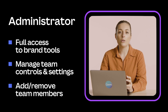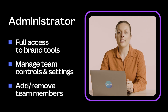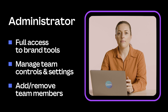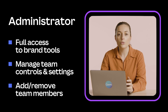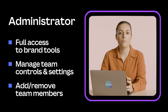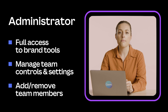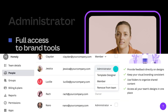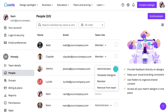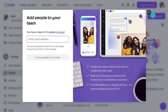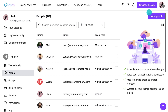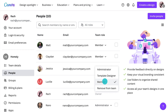The third role is Administrator. This one is pretty self-explanatory — this role is for those who need to administer the team. Administrators have full access to brand tools, as well as the ability to manage team controls and settings. Administrators can add people to the team, change their permissions, and even remove team members.